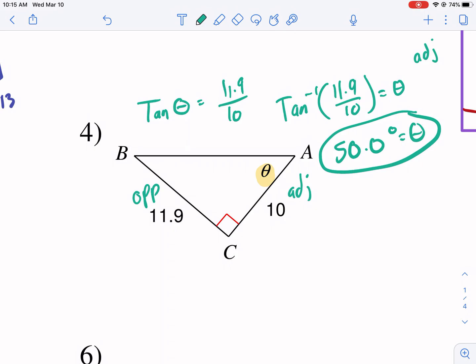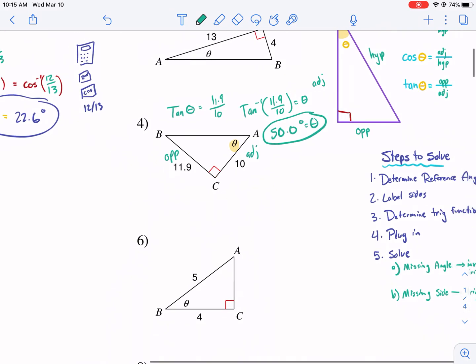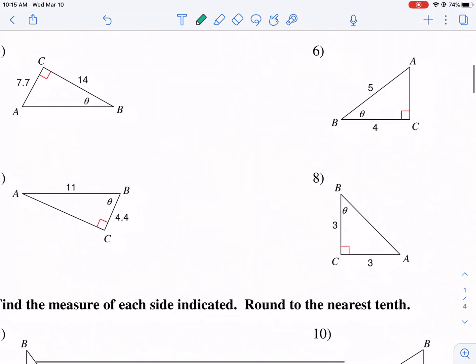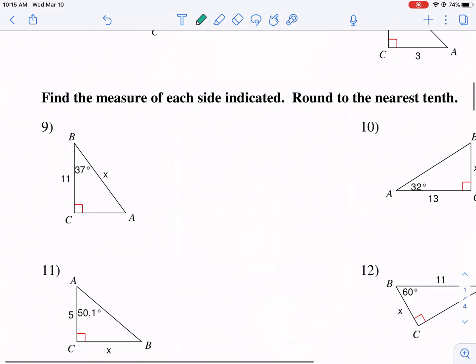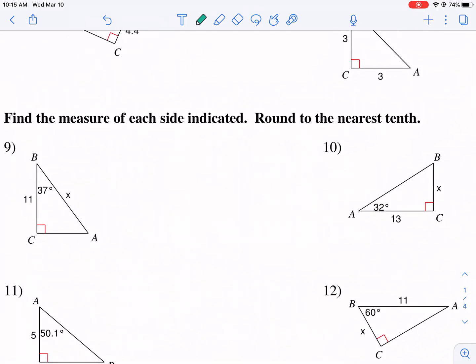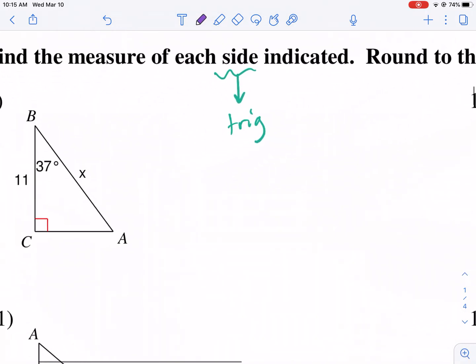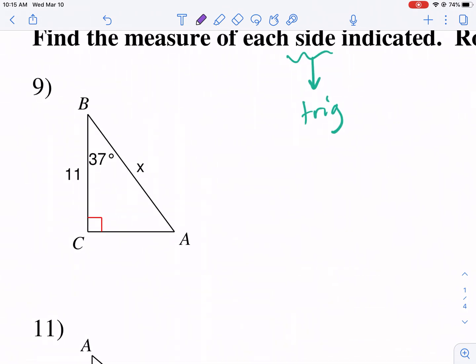Can you do 11.9 divided by 10 first and then take the inverse? That's fine. You could simplify this first, but you're doing the same thing, so I just usually wait until I'm done at the end. That's inverse trig. Now, find the measure of each side. If it's looking for a side, we know we're going to be using regular trig. I find that students like this one a little bit less, but I usually introduce it first because I think it's easier to understand at first.